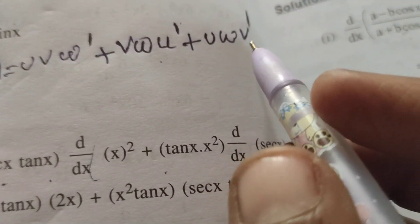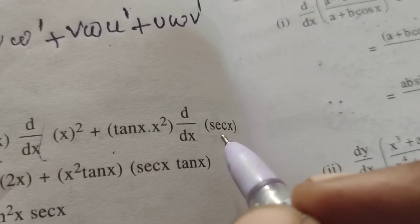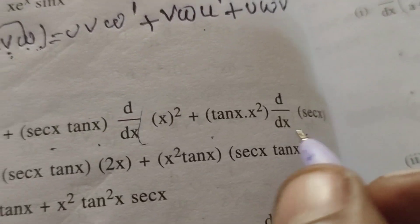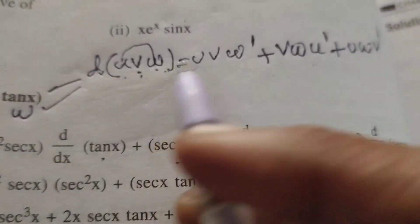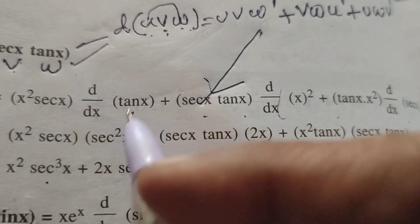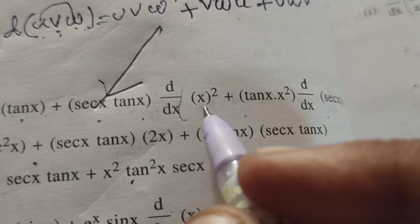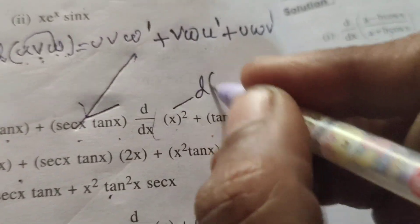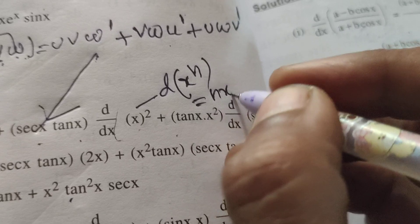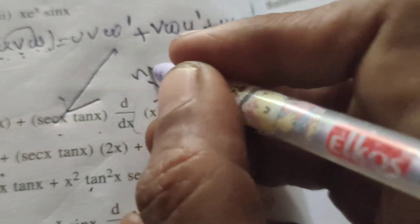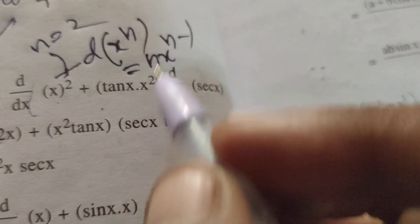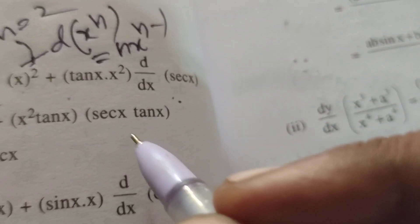Therefore d by dx of v means secant x. First, substitute the three functions into the formula: x squared · secant x — differentiation of tan x is secant squared x — plus secant x · tan x — differentiation of x squared is 2x, using the formula d by dx of x power n equals n into x power n minus 1, here n equals 2 — plus tan x, d by dx of secant x equals secant x tan x.